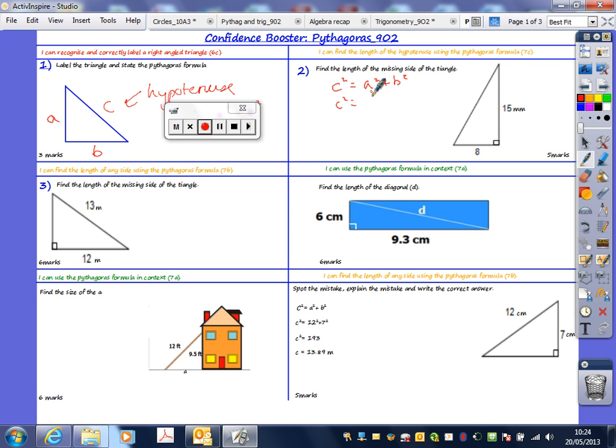The formula first, please. C squared is equal to, good. And then we've got here C squared is equal to what? A squared is what? Eight squared. Eight squared for me please. 64, yes. And 15 squared? 225, thank you. Add those together we get 289.